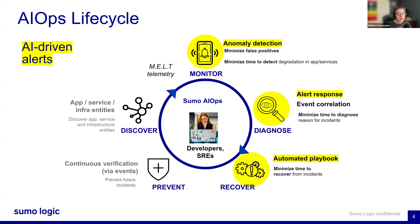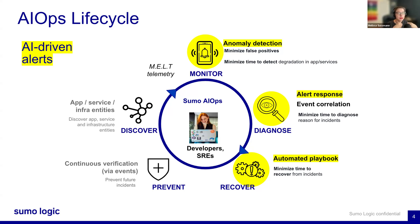The next step is anomaly detection. Traditional alerting systems often use static thresholds — just predefined limits, such as if latency exceeds five seconds. These static thresholds can be problematic because they may not adapt well to the variability in your systems, leading to false positives or false negatives. Our AI-driven alerting approach uses dynamic thresholds, which adjust based on real-time data patterns, reducing false positives and ensuring more relevant alerts.